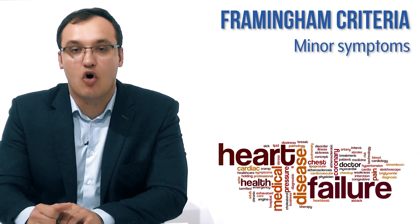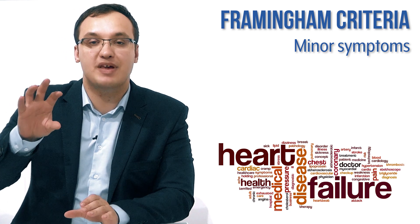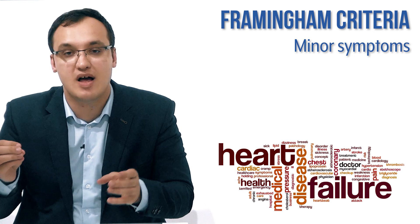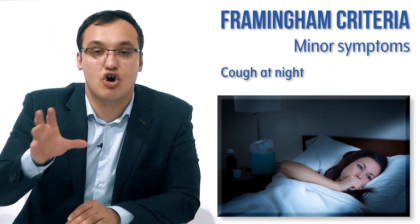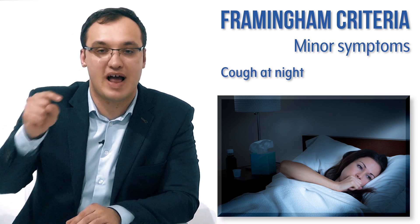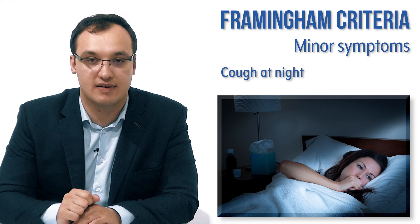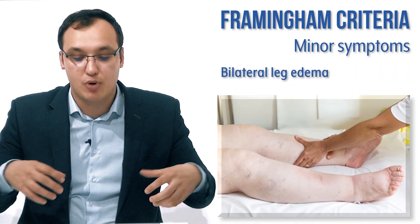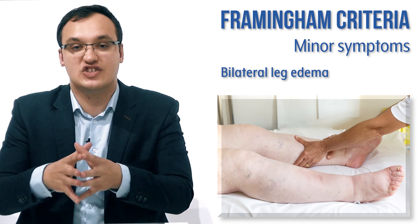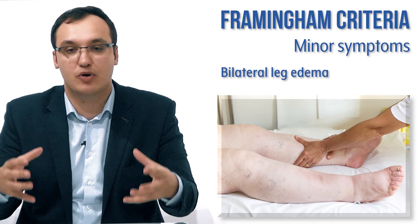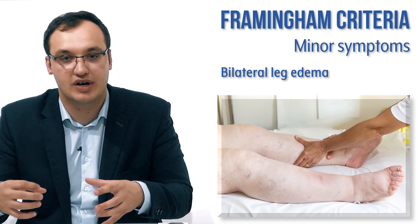Now let's look at the minor criteria. Something that happens at night — not paroxysmal nocturnal dyspnea, but instead a nocturnal cough. That's a minor criterion, not as severe as having dyspnea at night. We can also have bilateral leg edema, where both legs are swollen with fluid — a typical sign of heart failure, but classified as a minor criterion in this Framingham criteria.